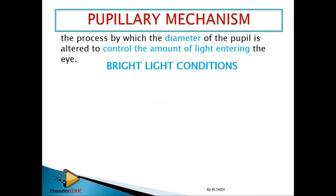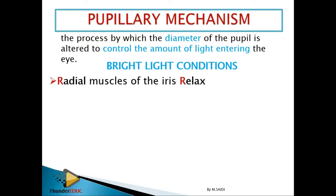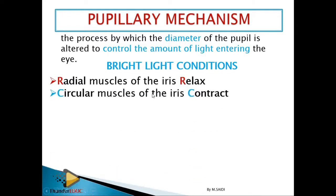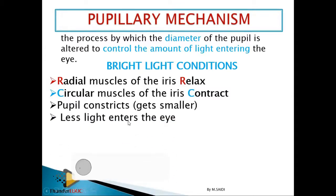During bright light, more light is entering. During dim light, less light is entering. The eye is supposed to adjust so that the same amount of light enters. During bright light, the radial muscles of the iris relax and the circular muscles of the iris contract. When they contract, the pupil constricts — it gets smaller and less light enters the eye.